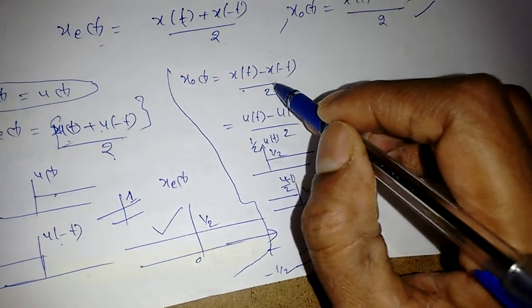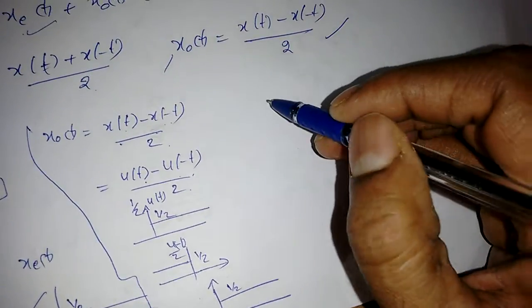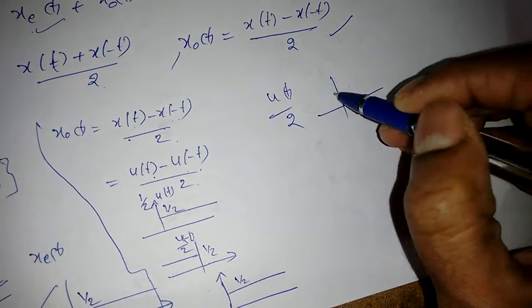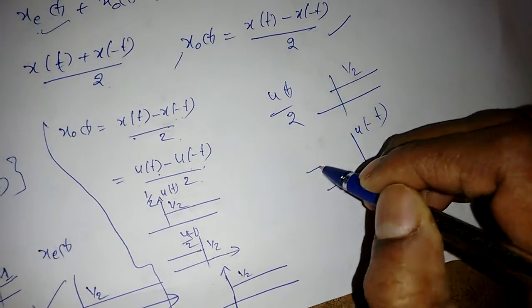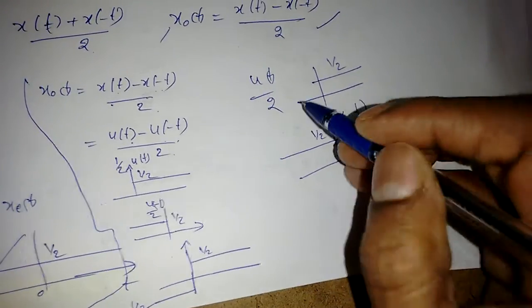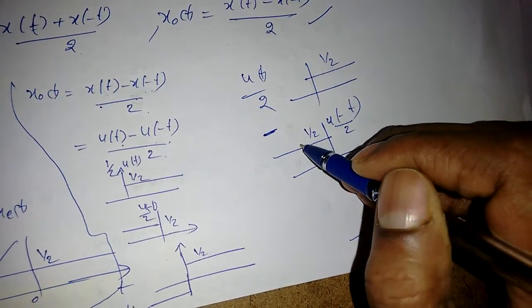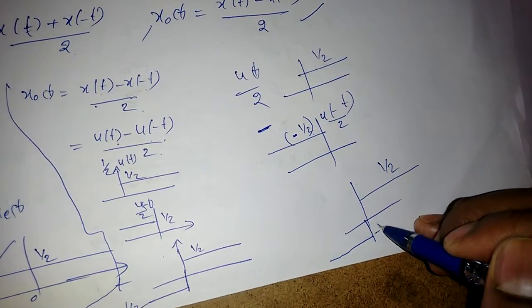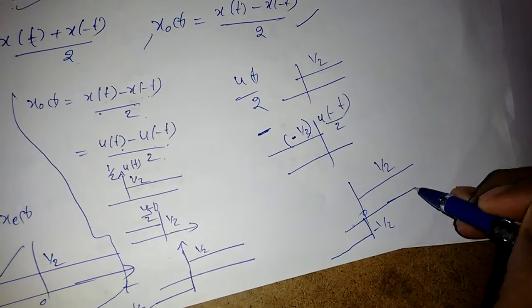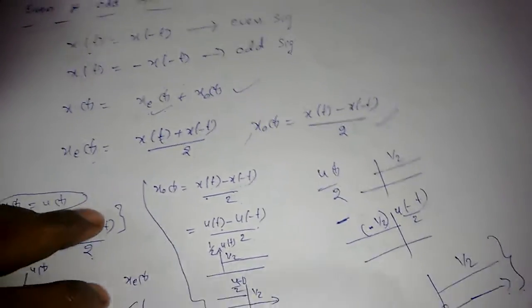For the odd part of u(t): [u(t) - u(-t)] / 2. u(t)/2 is (1/2) for t > 0 and u(-t)/2 is (1/2) for t < 0 with a negative sign applied. Subtracting gives a signal that is +1/2 for t > 0 and -1/2 for t < 0, which resembles a signum function. This is how we find the even and odd components of any signal.